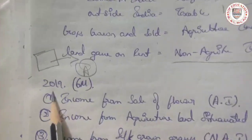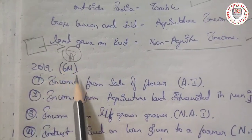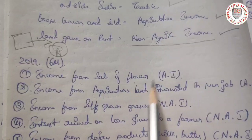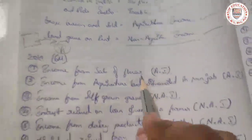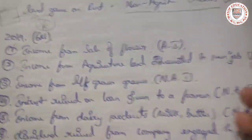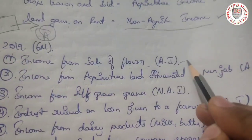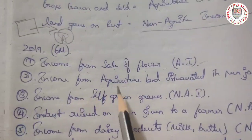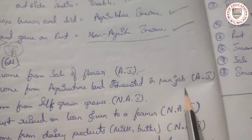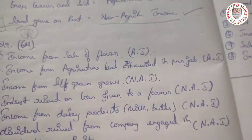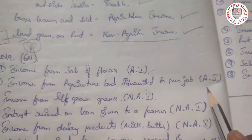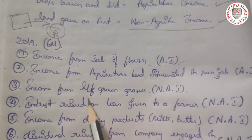This is a 2019 question paper — a six marks question. Income from sale of flowers: flowers are grown and sold, so that is agriculture income. Income from agriculture land situated in Punjab: it is situated inside India, so that is agriculture income.